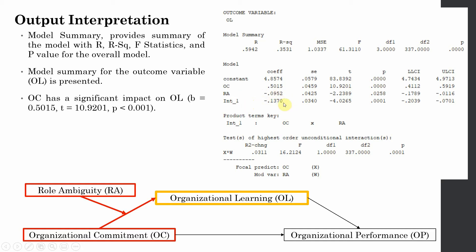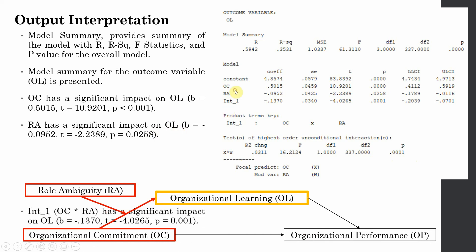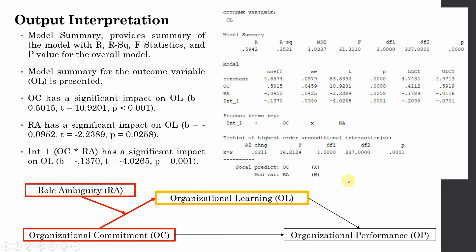Yes, there is a moderation effect. The impact of organizational commitment on organizational learning is significant — look at the p-value, less than 0.001, and there is no zero within the confidence interval. Role ambiguity has a significant negative impact, and the interaction effect of OC and RA is also significant, accounting for approximately 3.1% change in the criterion variable.